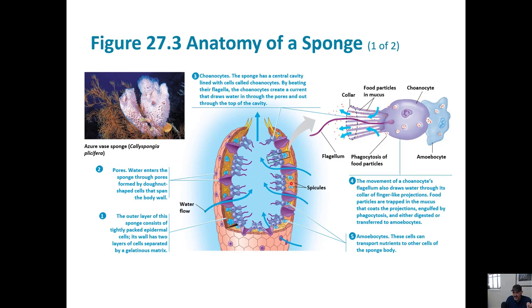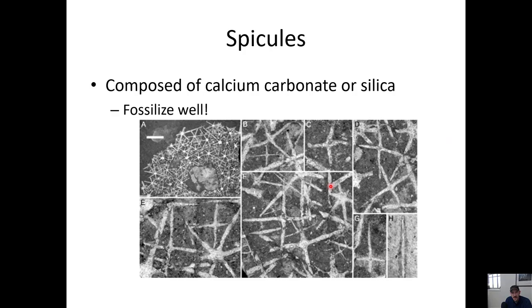The other structure worth mentioning is these extra hard, calcium-rich structures that provide support — they're kind of star-shaped, called spicules. Those are supporting structures, not cells. The oldest fossils we have are of the spicules, because the rest of the sponge doesn't fossilize all that well. But we can find spicules in rock layers from the late Precambrian.